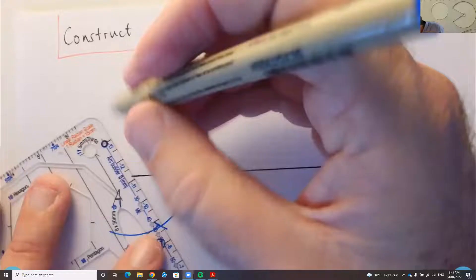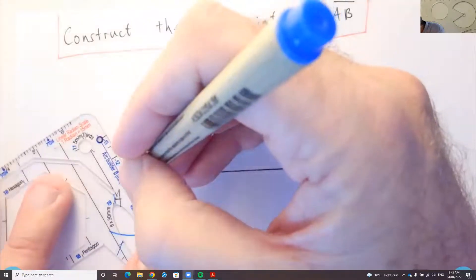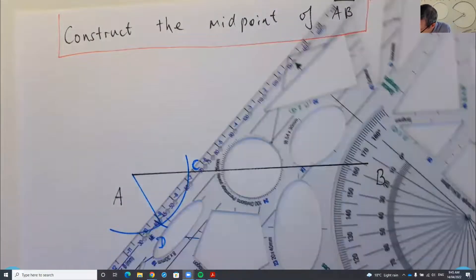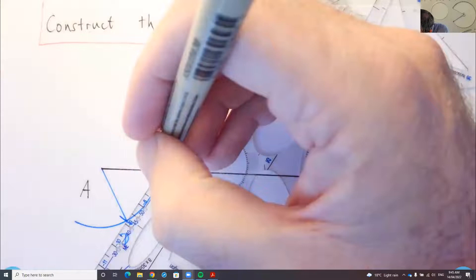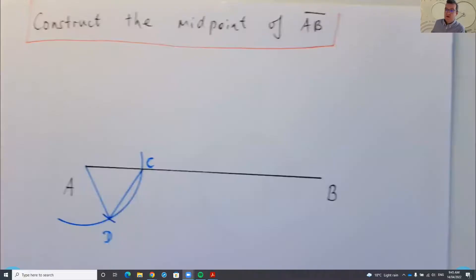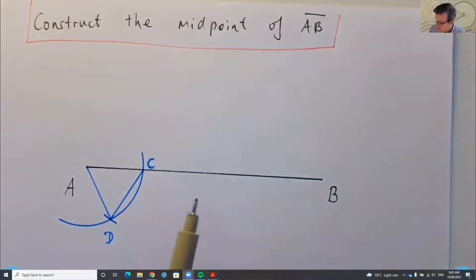So what I've actually got there is an equilateral triangle ADC. So I'll just draw that in. I don't really need to draw it in for the construction, but it'll be helpful for the justification a bit later.